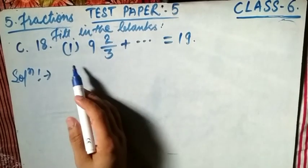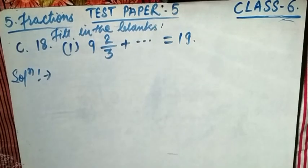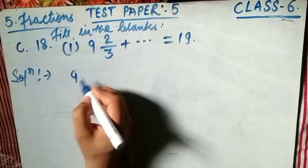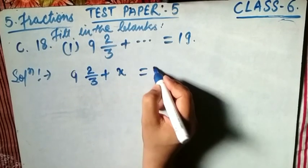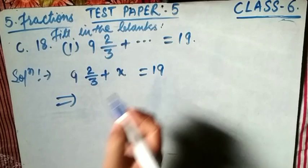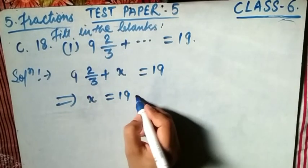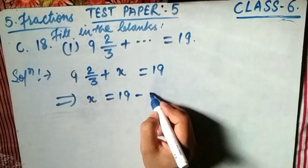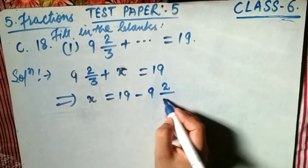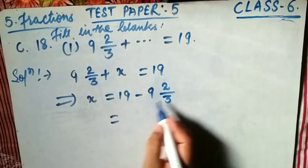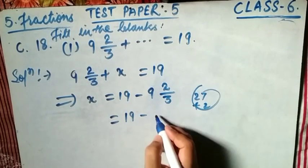Now Question 18, fill in the blanks. Sub-question: 9 and 2/3 plus blank equals 19. We need to find what number fills the blank. Let the blank be x. Write the equation: 9 and 2/3 plus x equals 19. Transpose 9 and 2/3 to the right-hand side with a negative sign. Convert 9 and 2/3 to an improper fraction: that is 29/3.